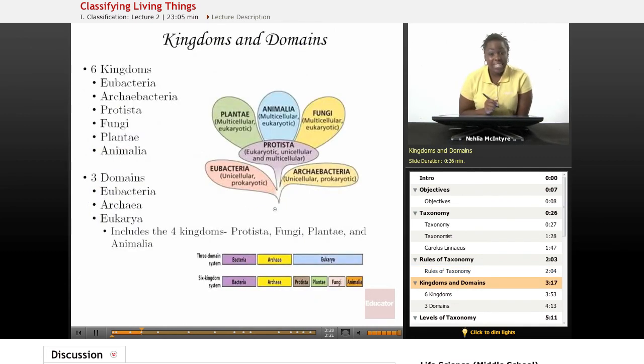Scientists, or taxonomists, have used different systems and groups to classify organisms. The two main ways that scientists group organisms are through kingdoms and domains.